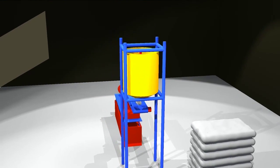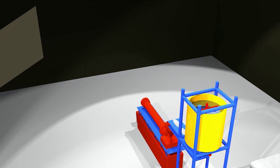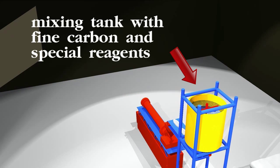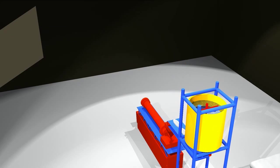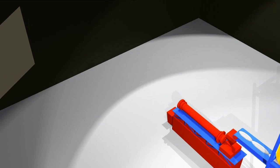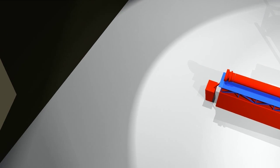directed to the mixer to be mixed with special reagents. Saturated with special reagents, the fine carbon is moved to the burning furnace where it is subjected to burning under